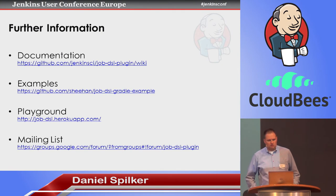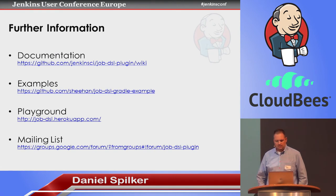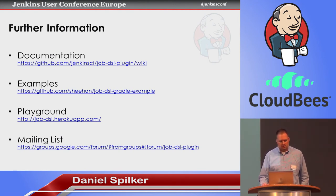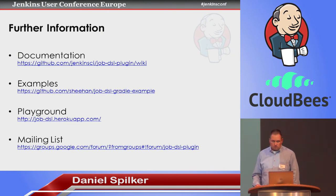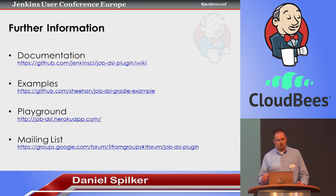If you're interested in the Job DSL plugin, you can find a lot of documentation on the wiki and on the project on GitHub. There's an example project which you can fork to get started — it provides example DSL scripts, which are already a little more complex and show how to use libraries and other features. There's also a playground, which is a web app where you enter DSL script on one side and on the other side you see the XML that gets generated. So you can try your DSL scripts without running them in Jenkins.